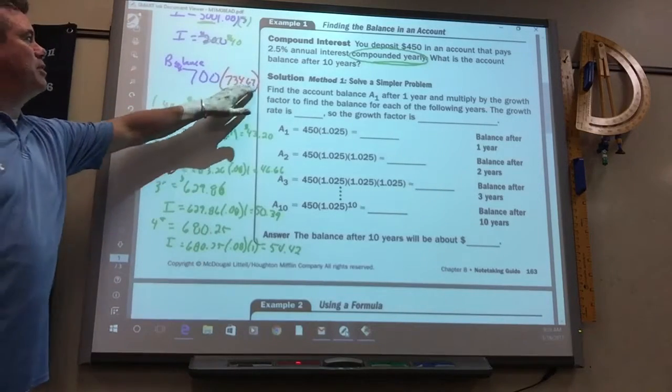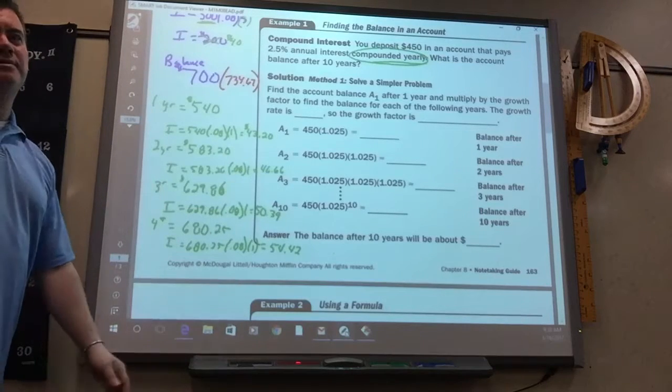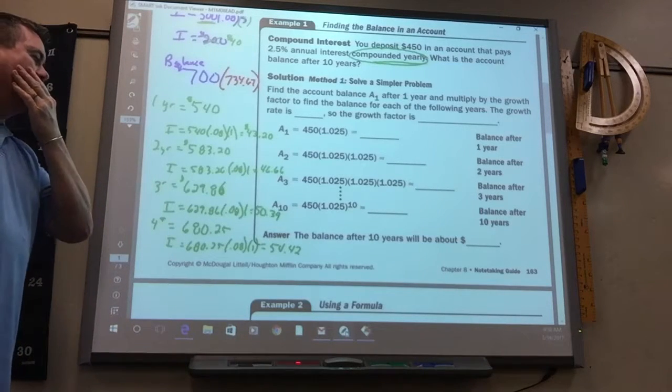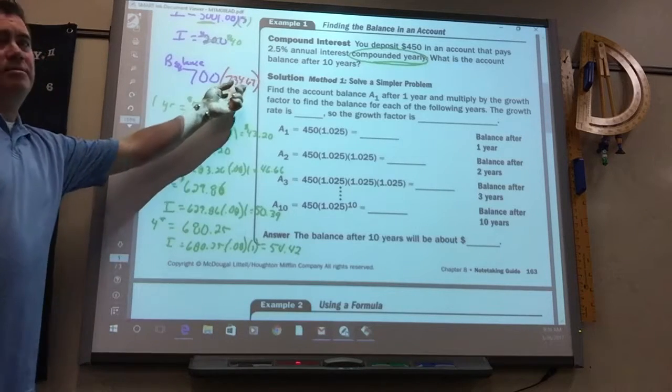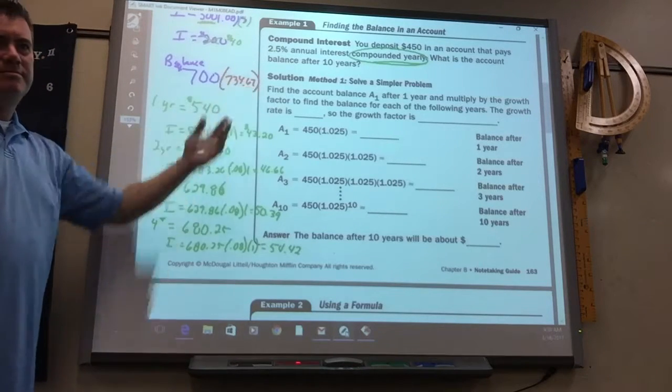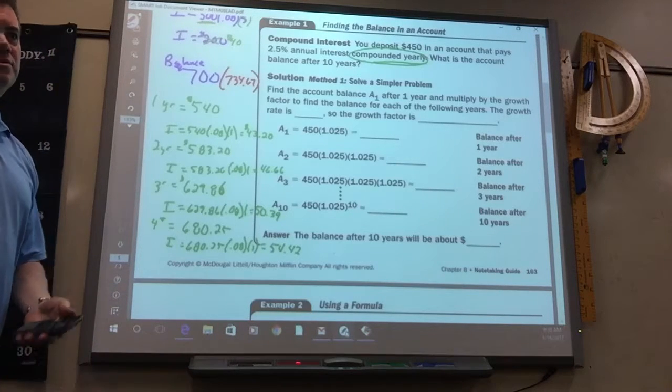And it's $734.67. So you made $34.67 more by it being compounded yearly. So you can imagine if they compounded it daily, it'd be even more than that, right? Which a lot of times it is compounded daily in an investor's account.